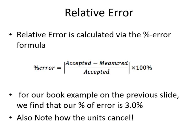Scientists are often interested in comparing the size of the error to the size of what is being measured, because that's very useful to know. So we can also determine what's called relative error, calculated via the percent error formula. You probably learned how to calculate percent error in chemistry or another science class, but if not, the formula is pretty straightforward.